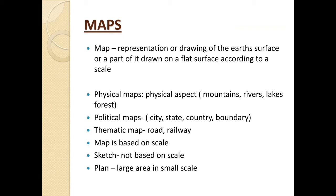A political map explains cities, states, countries, or boundaries. If a map shows the different states of a country or different countries in a continent or in the world, such a map is called a political map. A thematic map explains roads and railways in a specific country or place; such maps are called thematic maps.